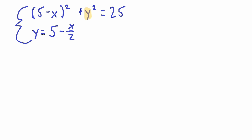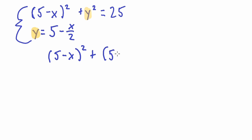Now we plug our expression for y into the first equation. The equation becomes: (5 minus x) squared plus (5 minus x over 2) squared equals 25. Remember the substituted term is still squared.